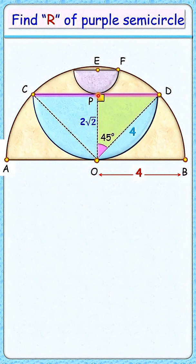Let's assume the radius of purple semicircle as R cm. Also, let's join OF here. Again, OF is the radius of brown semicircle and thus 4cm.